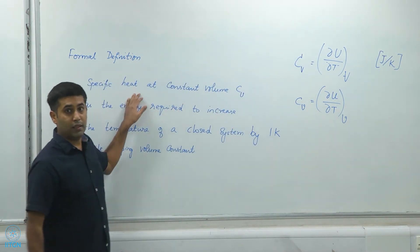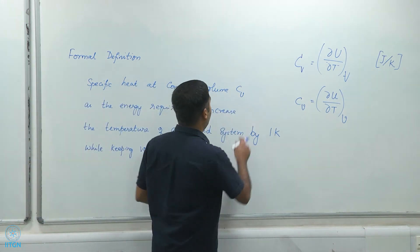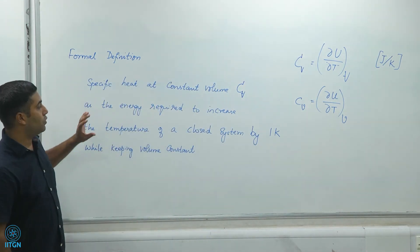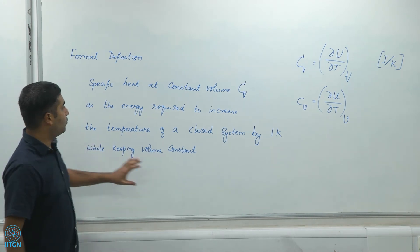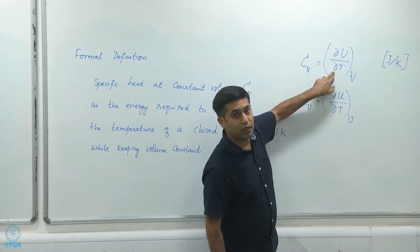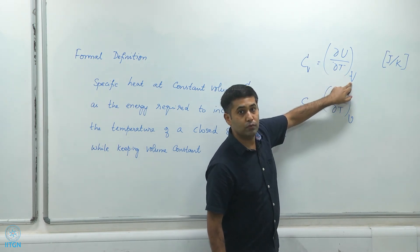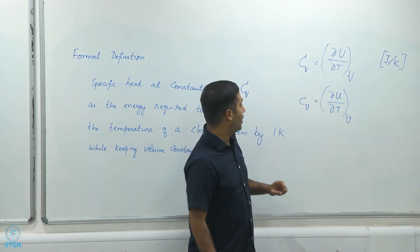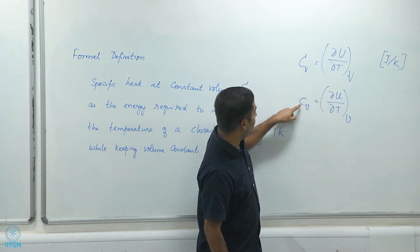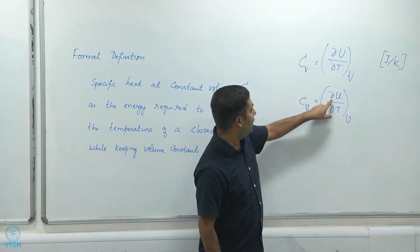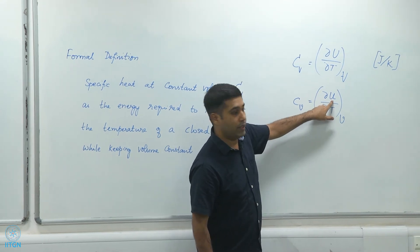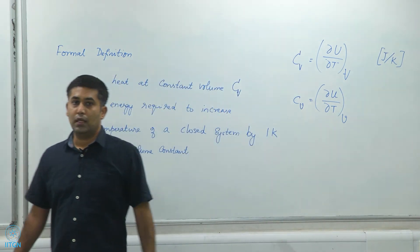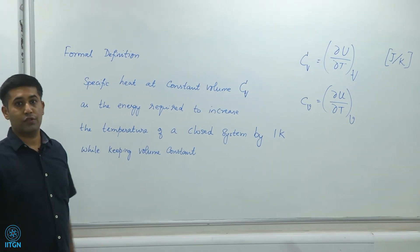To clarify, Cv is the energy required to increase the temperature of a closed system by 1 Kelvin while keeping volume constant. That is why there is a partial derivative and the constraint of constant volume. The more commonly used form is this intensive property, where I use the intensive internal energy, temperature, and hold the specific volume constant. That is the definition of Cv.